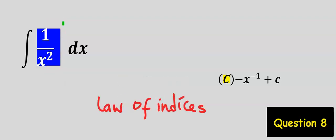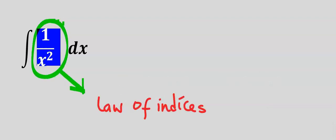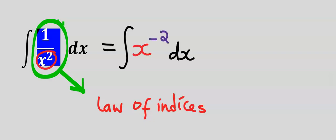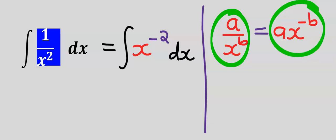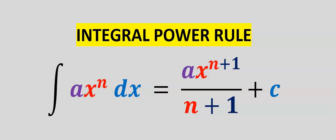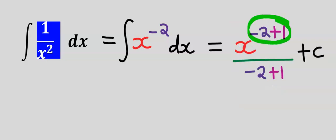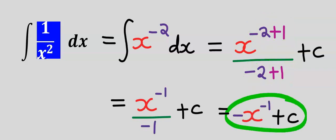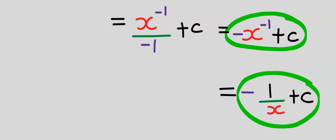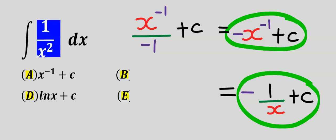Next, let's consider the integration of linear functions with powers. Let's integrate this function. The first step is to apply the law of indices: x squared in the denominator moves up to become x to the power of minus 2. Next, we integrate using the integral power rule — we add plus 1 to the minus 2 and bring everything down to the denominator. This is our answer. We can equally rewrite it in an equivalent form; both are the same. Our answer is c.